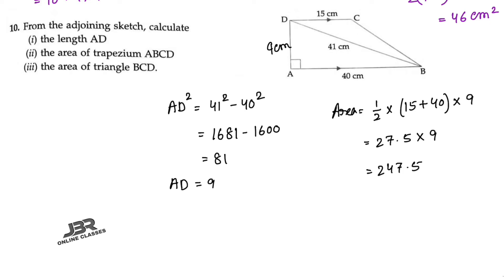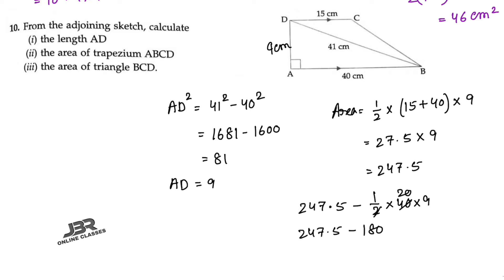The third part: area of triangle BCD. To find the area of BCD, subtract the area of triangle ABD from the whole trapezium. Area of triangle ABD = half × base × height = half × 40 × 9 = 180. So area of triangle BCD = 247.5 − 180 = 67.5 centimeter square. That is your answer.